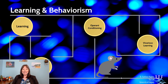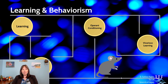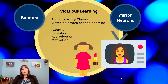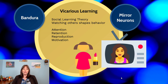The last section we're going to talk about in unit six on learning and behaviorism is not traditional classical conditioning or operant conditioning — it's a third type called vicarious learning. Vicarious learning is also sometimes called social learning theory, because we can change our behavior through watching others, and watching others will shape our own behavior.